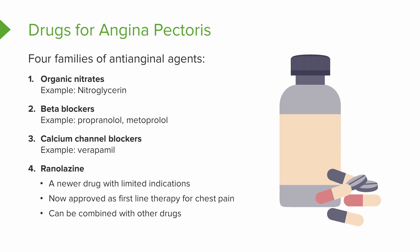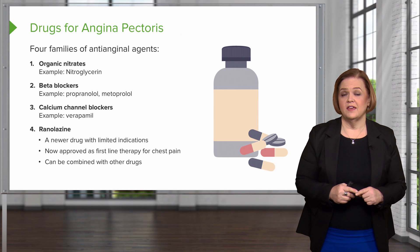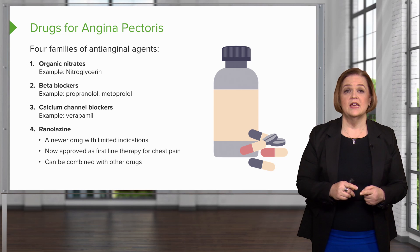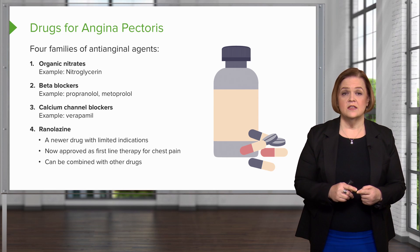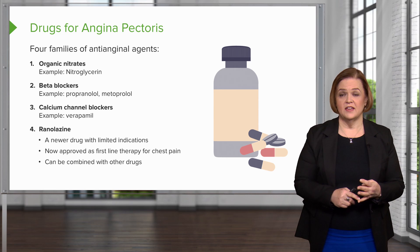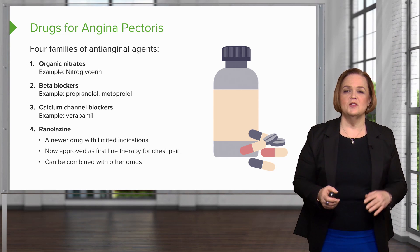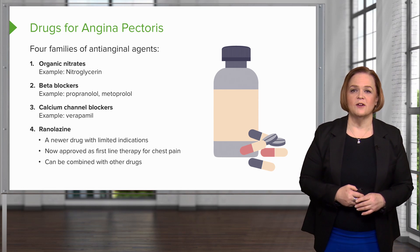Before we start rolling into this, you've got the framework: there are four families of drugs we use for chest pain — nitrates, beta blockers, calcium channel blockers, and ranolazine. That's all there is. Now let's break each one of these families down.